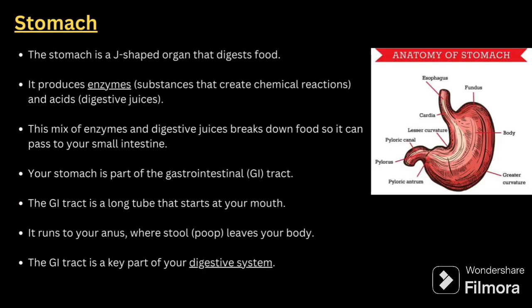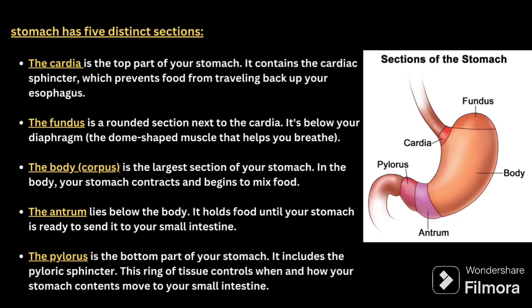The stomach is a J-shaped organ that digests food. It produces enzymes and acid digestive juices; this mixture breaks down food so it can pass to the small intestine. The stomach is part of the GI tract, which is a long tube starting from the mouth and running towards the anus. The mixing of food with digestive juices happens inside the stomach. The stomach has five distinct sections.